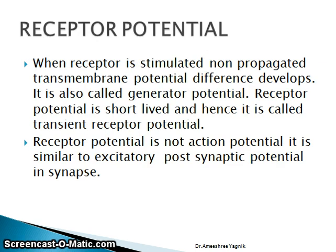Fifth property: receptor potential. When a receptor is stimulated, a non-propagated transmembrane potential difference develops — this is also called generator potential. Receptor potential is short-lived and hence called transient receptor potential. Receptor potential is not an action potential; it is similar to the excitatory post-synaptic potential in a synapse. Ion exchanges take place at the receptor surface, but the response remains local — it does not propagate from one place to another — which is why it is called generator potential. More detail on excitatory post-synaptic potential will be covered when we study synapses.